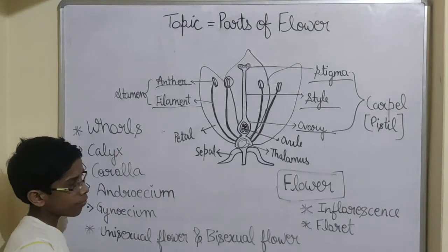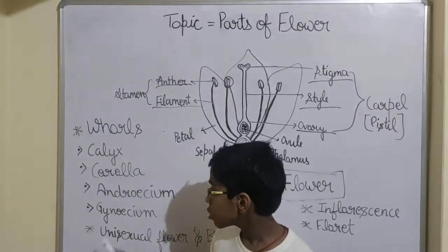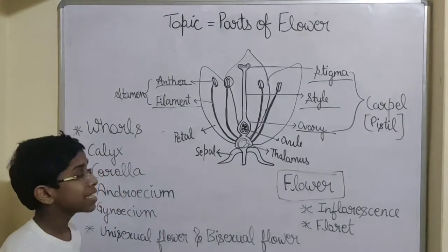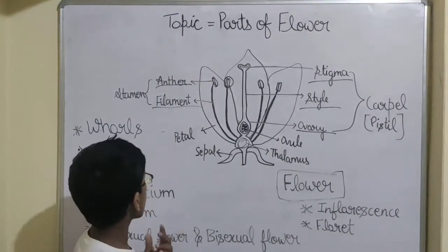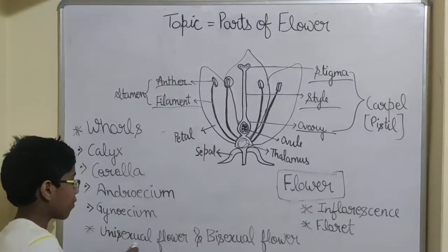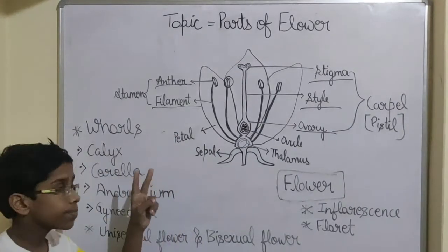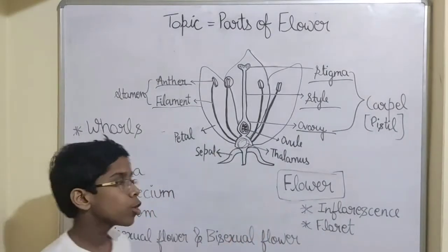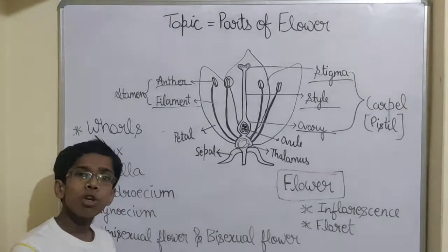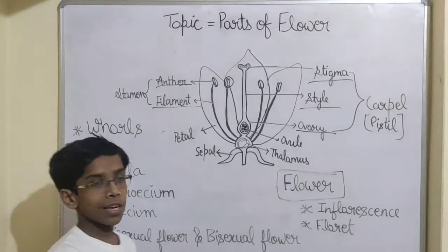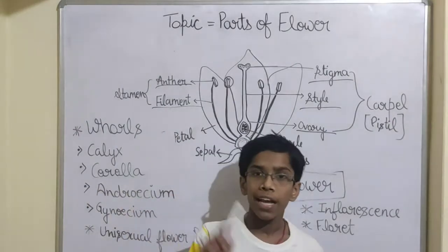Unisexual flower is a flower which has either androecium or gynoecium. Calyx and corolla are in it, but we are talking about androecium and gynoecium — a unisexual flower has either one of them. 'Uni' means one. Bisexual flower is a flower in which all four whorls are there — calyx, corolla, androecium, and gynoecium.